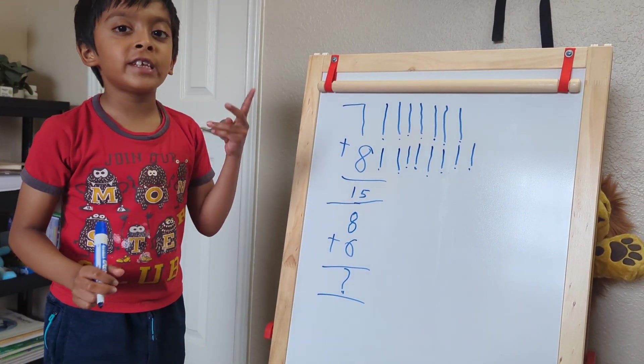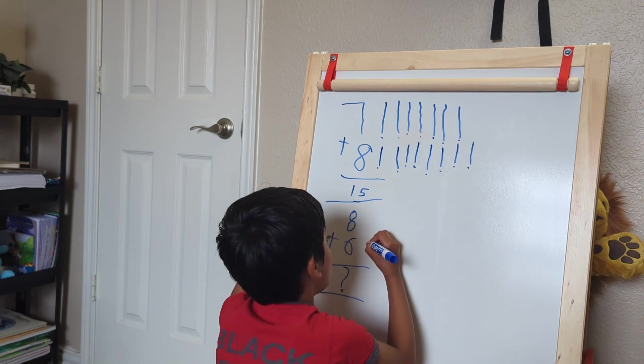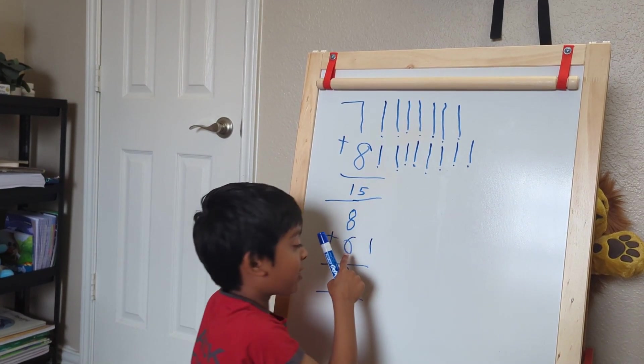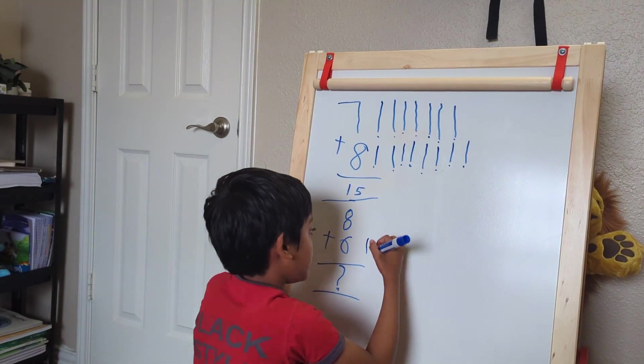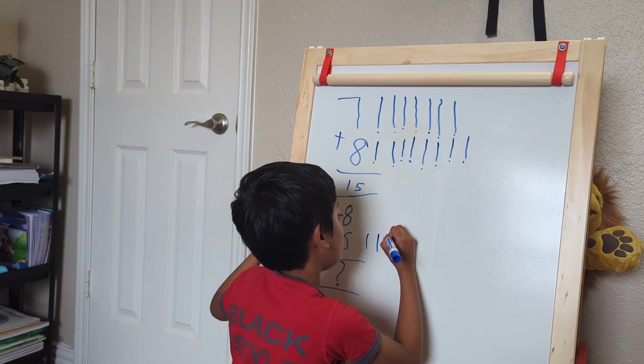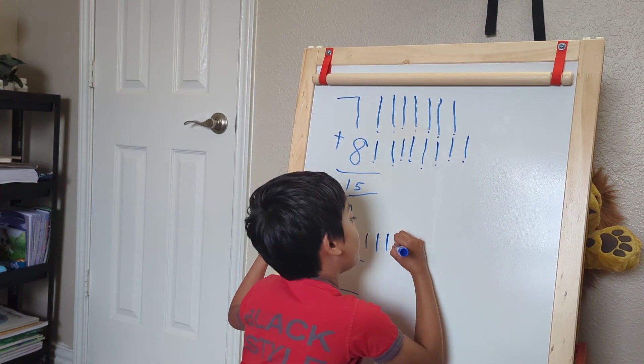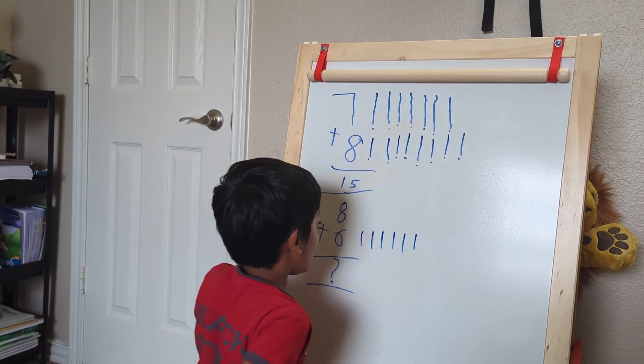So from 8, we will count after it in the second number. So let's write 6 here. So do you see the number 6? This is number 6. So let's write 6 lines. 1, 2, 3, 4, 5, 6. There.